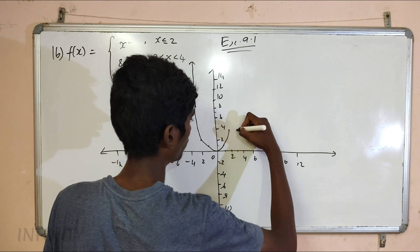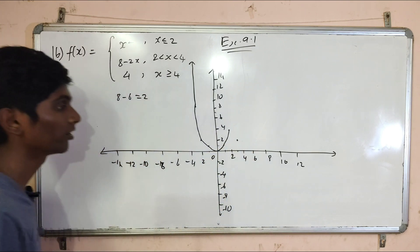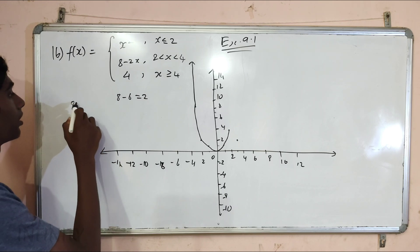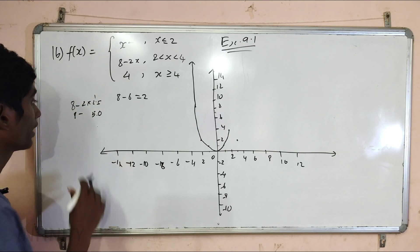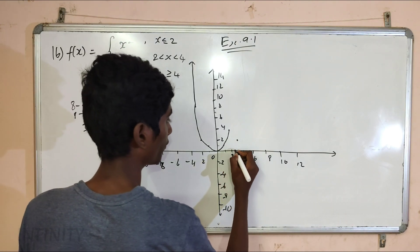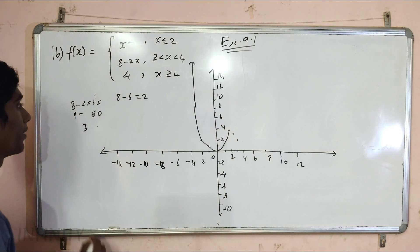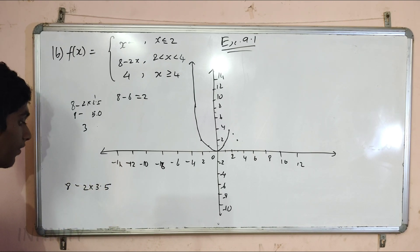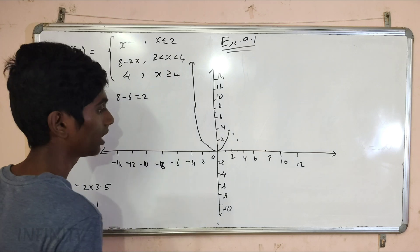If we substitute x equals 3, the value is 8 minus 2 times 3, which gives 2. Next substitute x equals 2.5: 8 minus 2 into 2.5 equals 8 minus 5.0, which is 3. Then substitute x equals 3.5: 8 minus 2 times 3.5 equals 8 minus 7, which is 1.